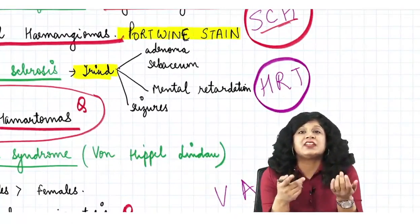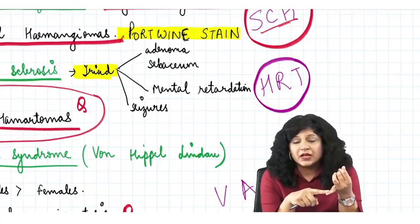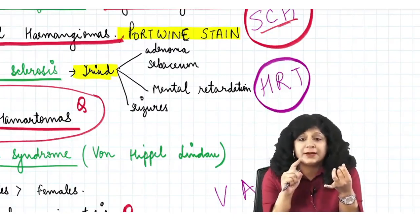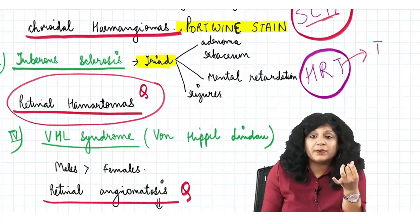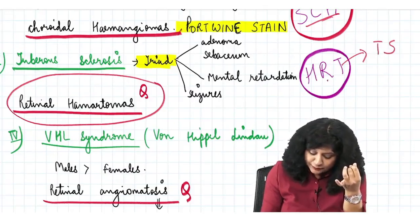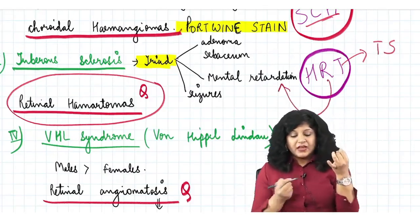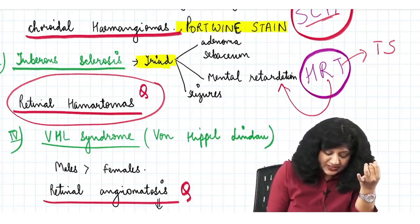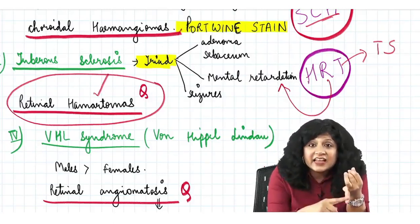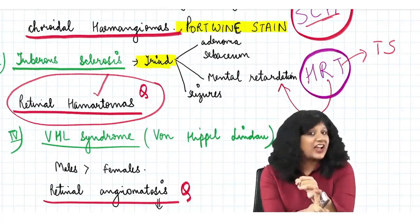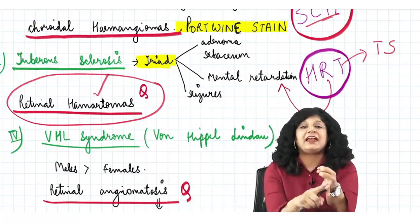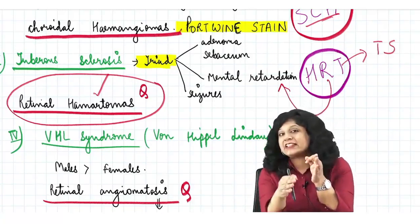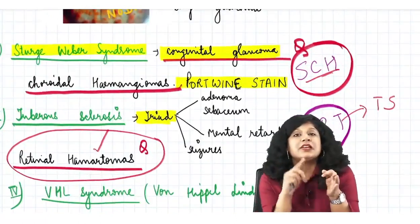The diagnosis of tuberous sclerosis is made by its classic triad. Remember the mnemonic HRT: T for tuberous sclerosis, R for retardation (mental retardation), and H for hamartomas (retinal hamartomas). So tuberous sclerosis presents with retinal hamartomas and mental retardation, while Sturge-Weber syndrome shows choroidal hemangiomas. Therefore, retinal hamartomas is not the right answer here.